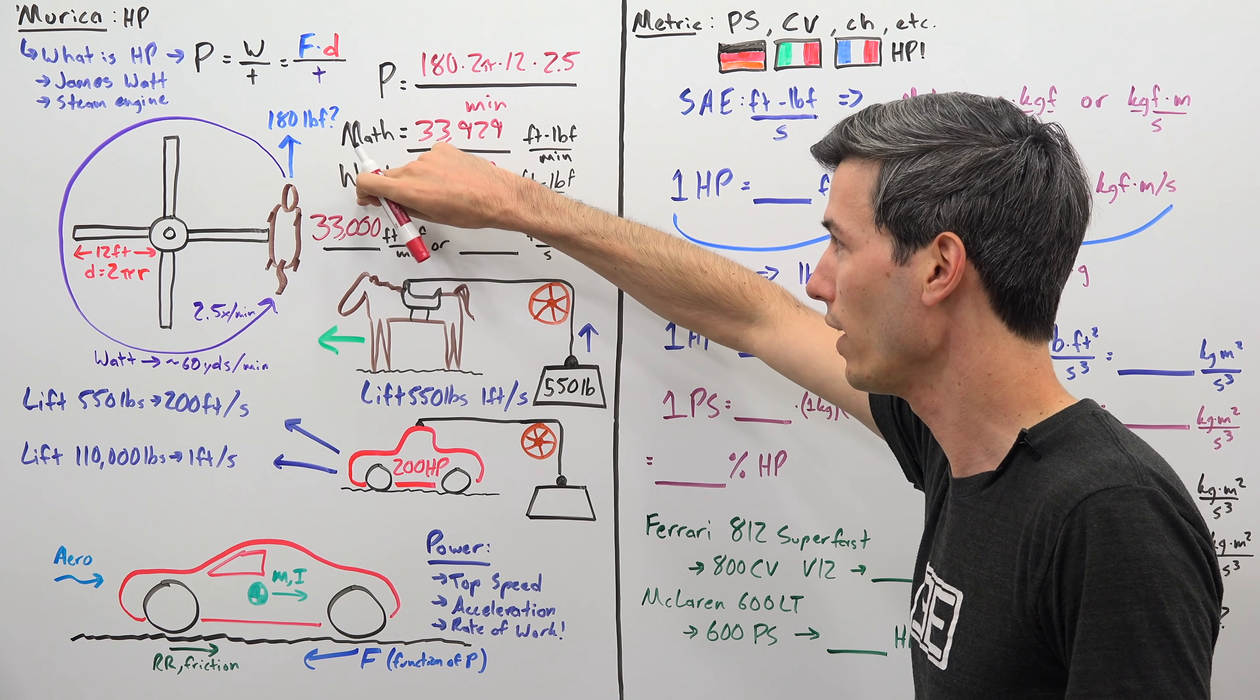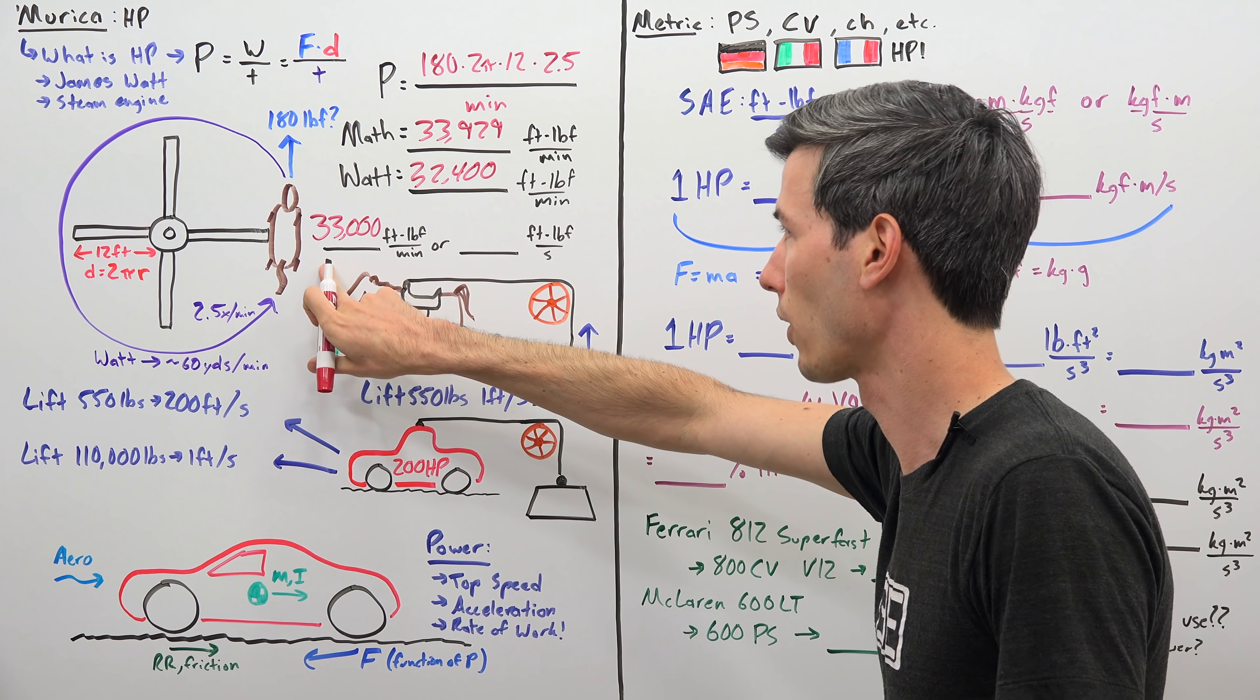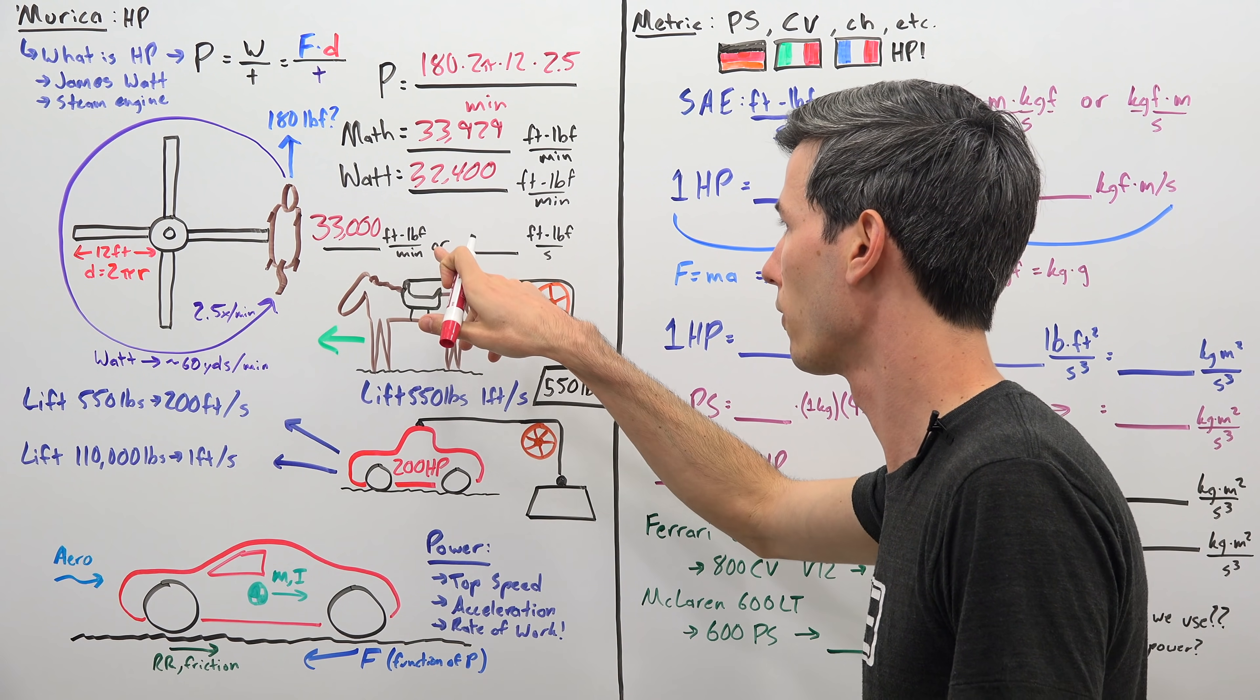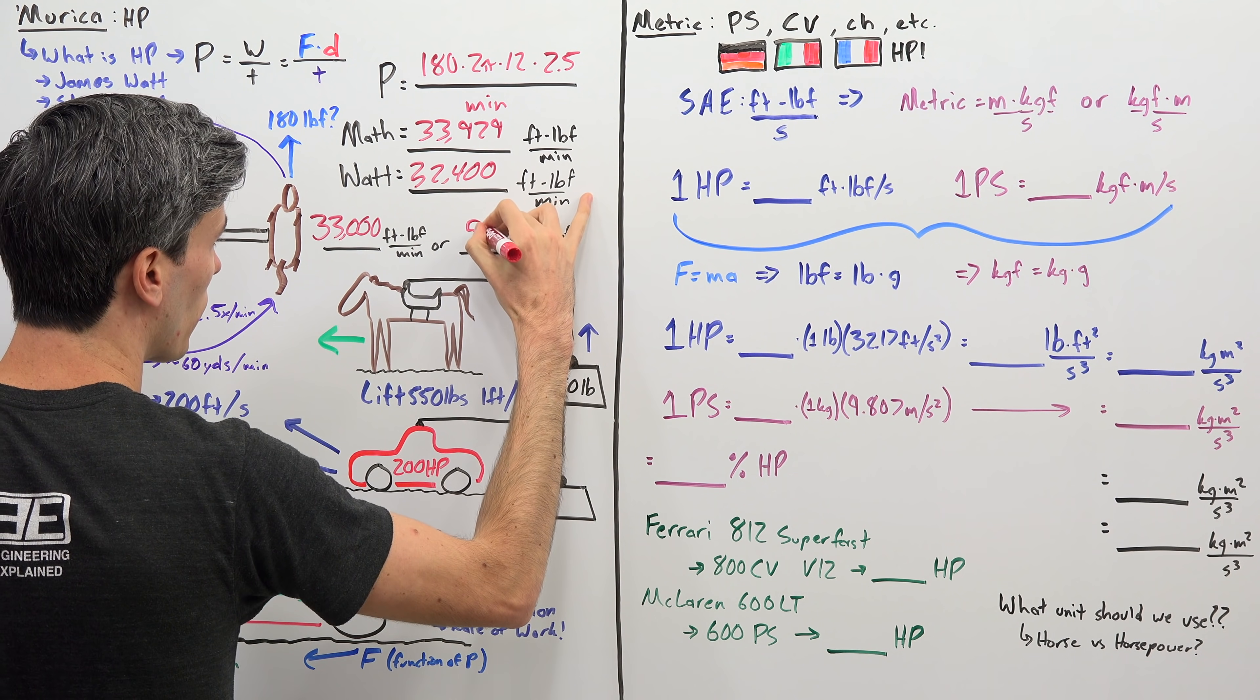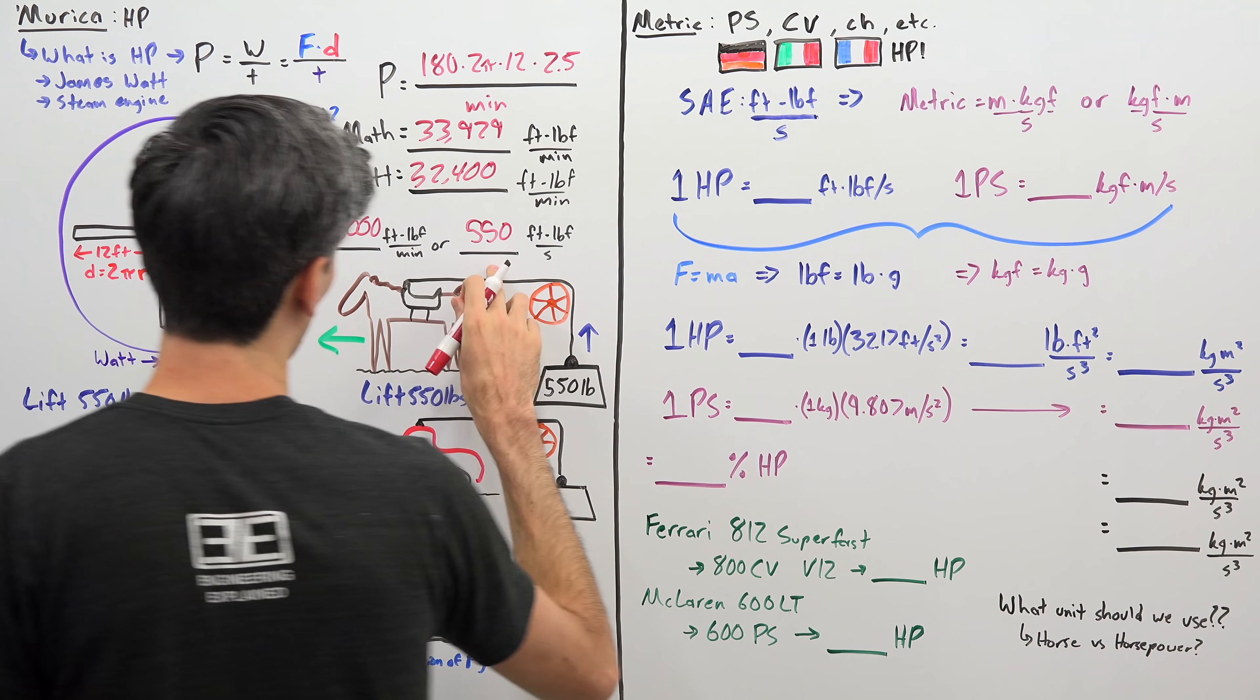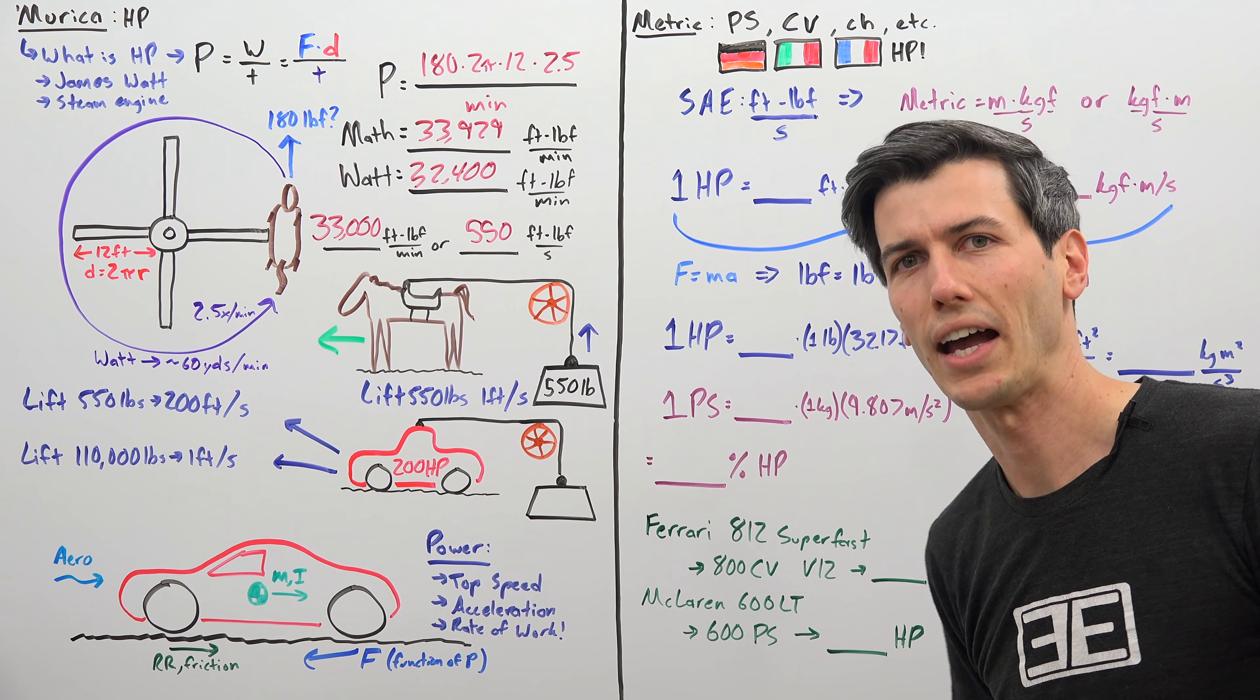But this is the unit today. So one horsepower today is equal to 33,000 foot-pounds of force per minute or 550, we can simply divide that by 60, 550 foot-pound force per second.